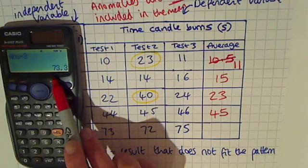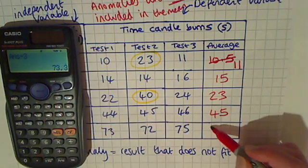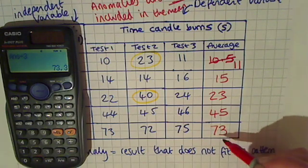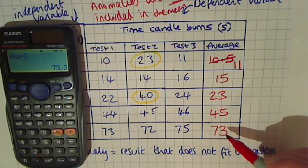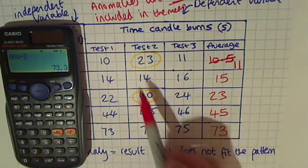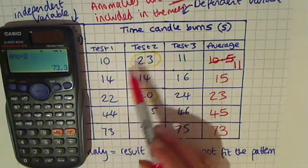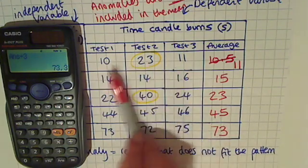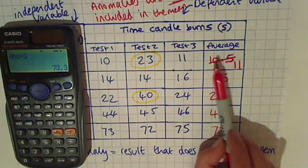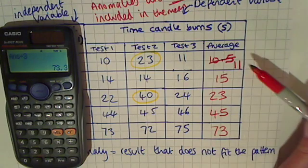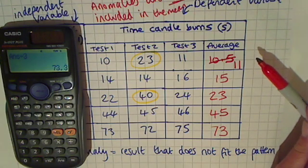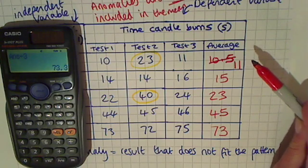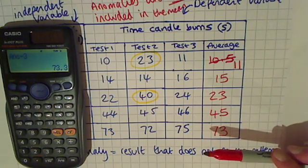So our average is going to be 73. Don't forget when calculating means or averages: first of all, you need to identify any of those anomalies and then calculate the mean along the rows. If you get a decimal point, you round up to the nearest whole number if you have five or above after the decimal point, or you round down if you've got anything below five after the decimal point.